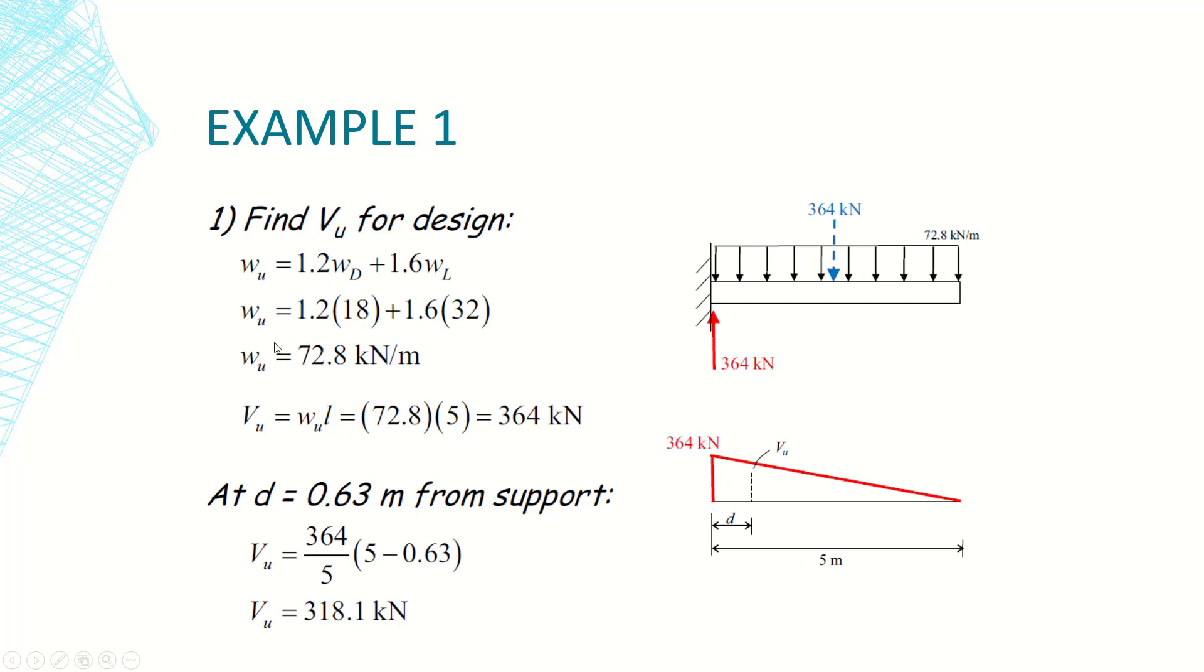So 1.2 times 18 which is the total dead load plus 1.6 times 32 which is the total live load, so w ultimate in our case is 72.8. By using statics method, the equations of equilibrium for this beam, the reaction which represents the shear at the support is equal to the applied load.